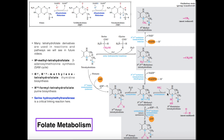From N5-N10-methanyl tetrahydrofolate, going to the right, we have the enzyme cyclodeaminase. In the forward direction it actually attaches an ammonia group, converting N5-N10-methanyl tetrahydrofolate into N5-formamino tetrahydrofolate. This form can also be used to transfer one carbon, but it will also transfer a nitrogen in the process.